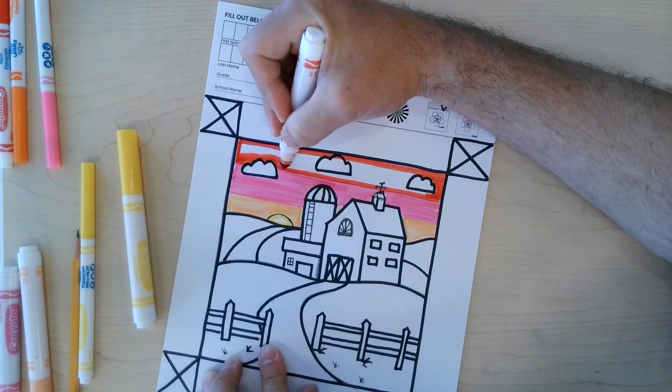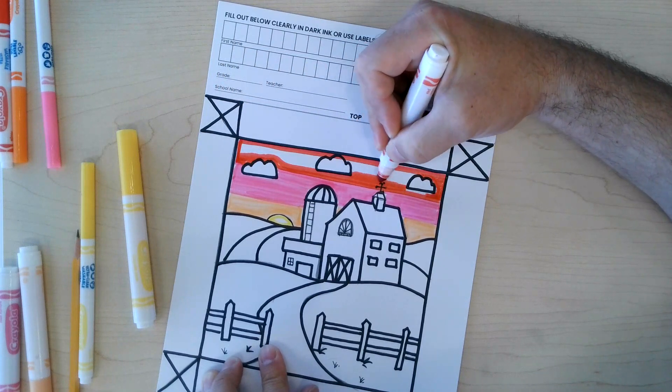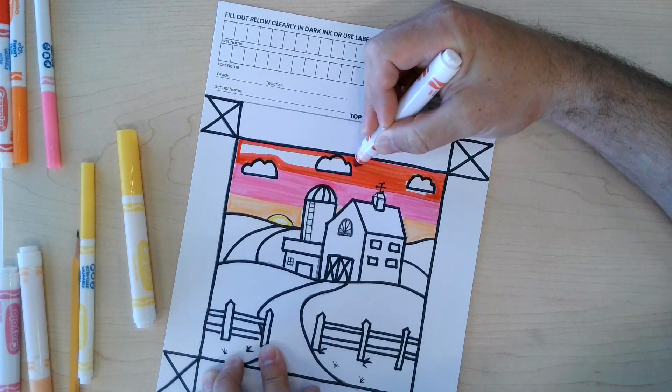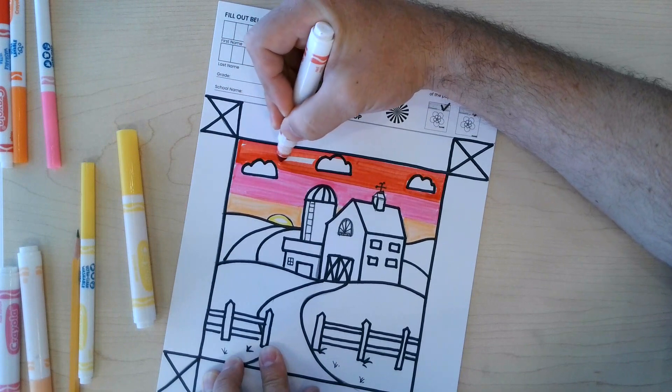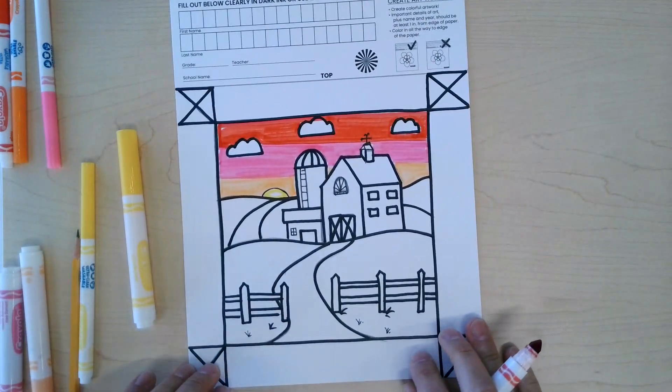Sometimes you have to turn your marker if it starts to get dry a little bit. If you always stay on one side, it might need time to recover. I really like that look on there.